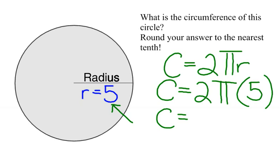Using your calculator, you will calculate 2 times pi using the pi button times 5.